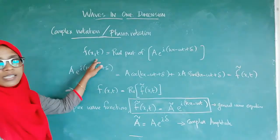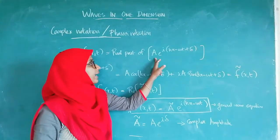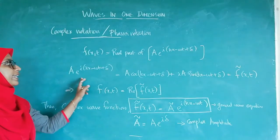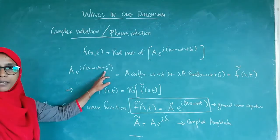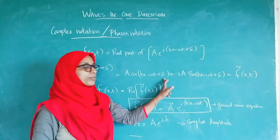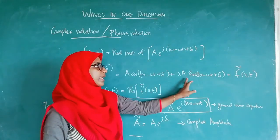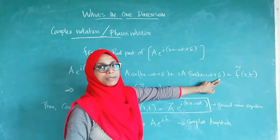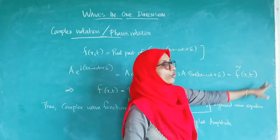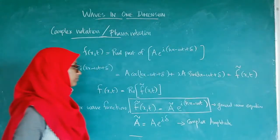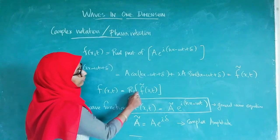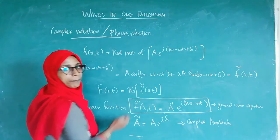So, f(x, t) = A cos(kx − ωt + δ) + iA sin(kx − ωt + δ), which represents the total complex wave equation. The physical solution f(x, t) is the real part of this complex representation.